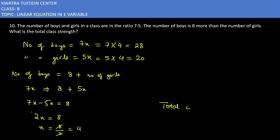And the total class strength? The total class strength is 28 plus 20, and 28 plus 20 means the total strength of the class is 48.